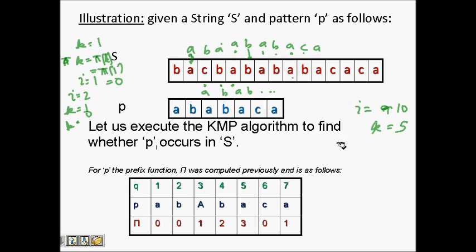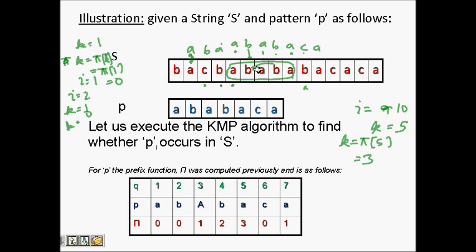Now the matching becomes something smaller and we need to find it. k will become pi[5]. From the table, pi[5] = 3, so k becomes 3. This is a very important point — why is k becoming 3? It means that even though we didn't get a match at that point, within a b a b a we had already matched up to that part. If we slide the window by 2, there will still be a matching — k=3 means a b a are still matching.